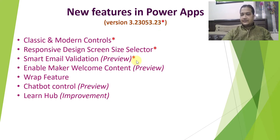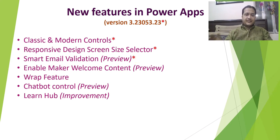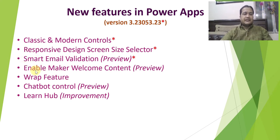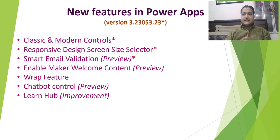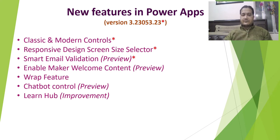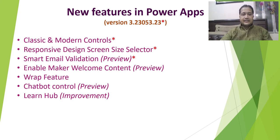Next is Smart Email Validation. This feature is in preview as of now and is only available for model driven apps — please remember it is not available for canvas app as of now. Another feature is Enable Maker Welcome Content, where whenever users visit PowerApps they can see a customized welcome message which you can create by going to Power Platform Admin Center. Also, the Wrap feature allows you to publish your app on Android and iOS.